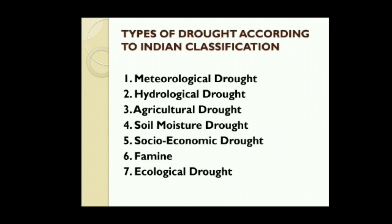Types of drought according to Indian classification. The Indian classification has given seven types of drought. First, meteorological drought — according to the Indian Meteorological Department, meteorological drought is said to occur when mean rainfall is less than 75% of normal rainfall in an area; severe drought when rainfall deficiency exceeds 50% of normal rainfall; whereas moderate drought is between 25–50% deficiency of rainfall. Second, hydrological drought — it is associated with the reduction of water, which causes surface water drought and also ground water drought.